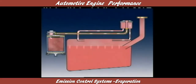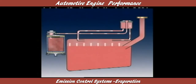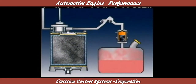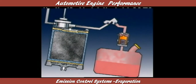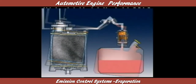A vapor line is connected to the vapor space in the tank or the liquid vapor separator, carrying fuel vapors from the tank to a storage volume. This vapor line can incorporate check valves, which stop liquid fuel from entering the storage volume if the vehicle is tilted too far from the horizontal.